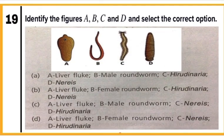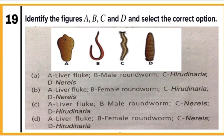Question 19: Identify the figures A, B, C, and D and select the correct option. Figure A is liver fluke, a parasite belonging to phylum Platyhelminthes. B is female roundworm belonging to phylum Aschelminthes. C is Nereis, an annelid. D is Hirudinaria, a blood-sucking leech also belonging to phylum Annelida. Correct match is D. Mark D.